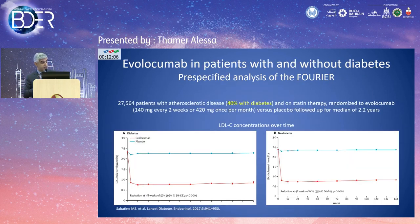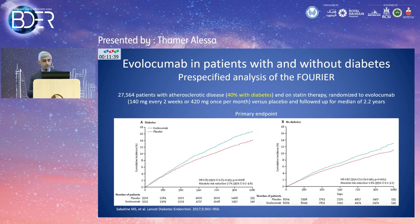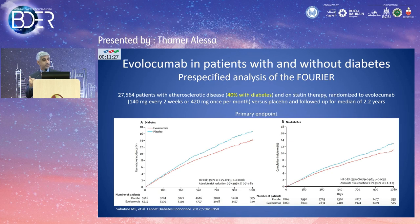Regarding PCSK9 inhibitors, evolocumab in the FOURIER trial — which enrolled a huge number of patients, about 40% with diabetes — showed similar LDL reduction of approximately 57-60% regardless of diabetes status. Cardiovascular outcome analysis also showed no significant difference between diabetics and non-diabetics, with both groups achieving approximately 23-27% reduction in cardiovascular endpoints.